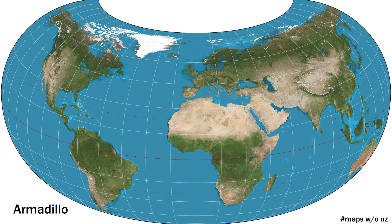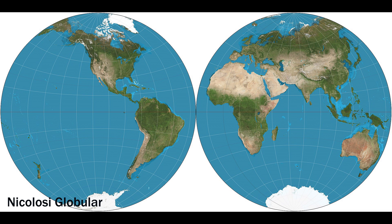The last individual projection I wanted to show is the Nicolosi Globular projection. This is referred to as a polyconic projection — multiple cones are placed on the globe. But this projection can only show one hemisphere at a time, so when it shows the entire globe, it's usually like a pair of glasses. Like many compromise maps, it doesn't have a hard practical use, but it is very aesthetically pleasing.